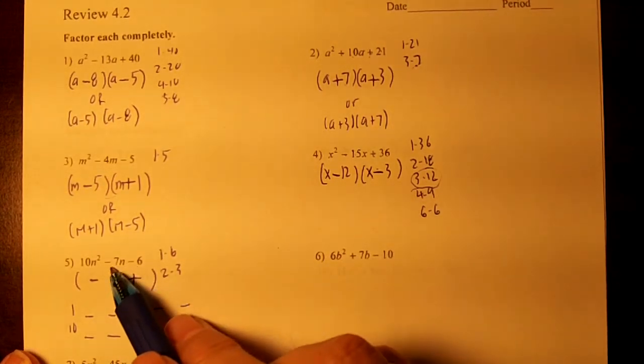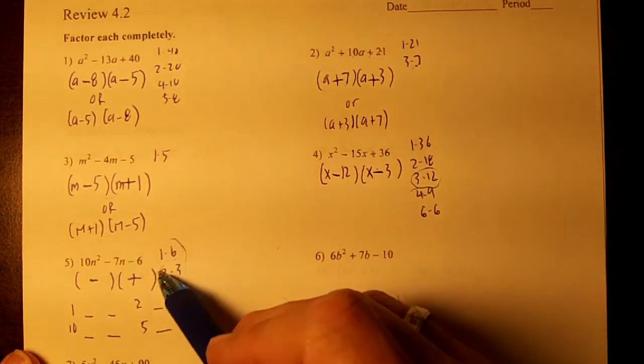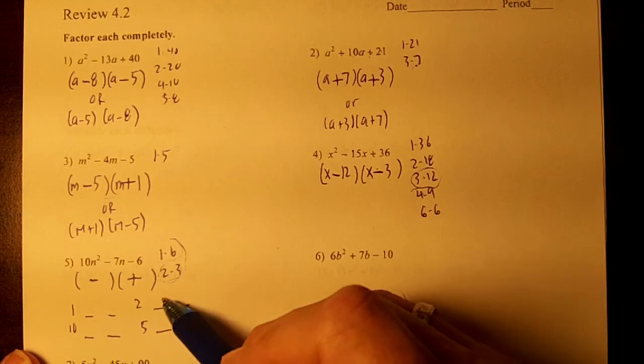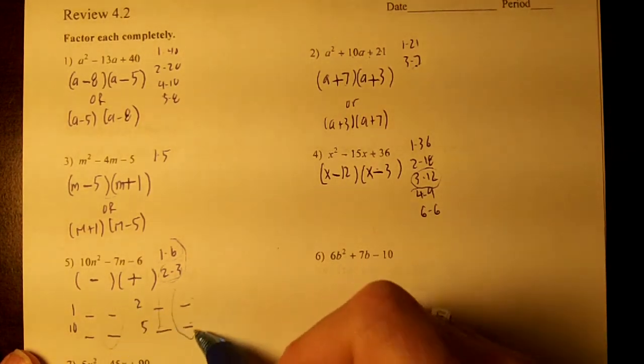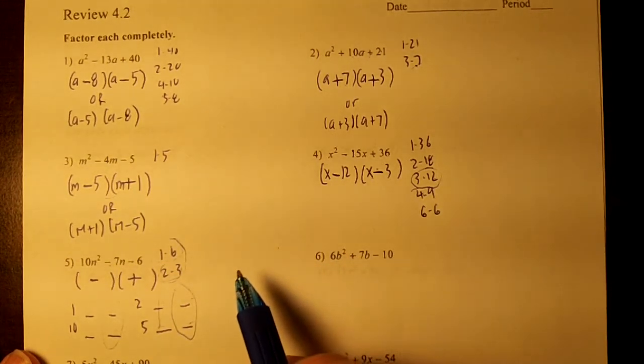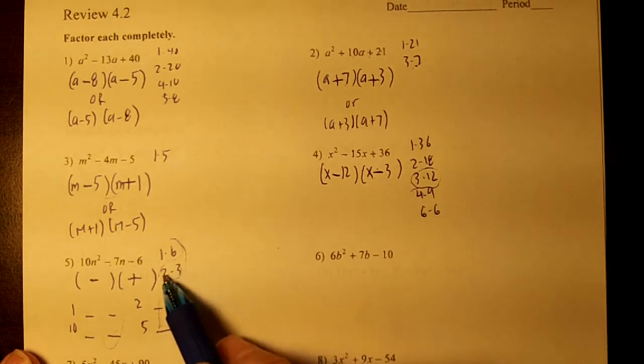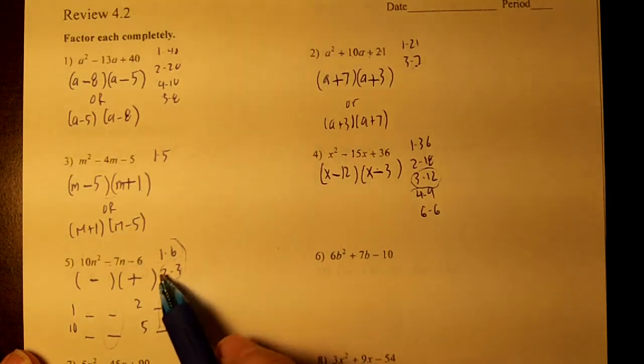We want to subtract and get 7. So we're going to put these factors, either the 1 and 6 or the 2 and the 3, here and here. Multiply across, and these two numbers have to subtract and give us 7. And the 2 and the 3 are going to work to subtract and give you 7? No, that's going to be the 1 and the 6.